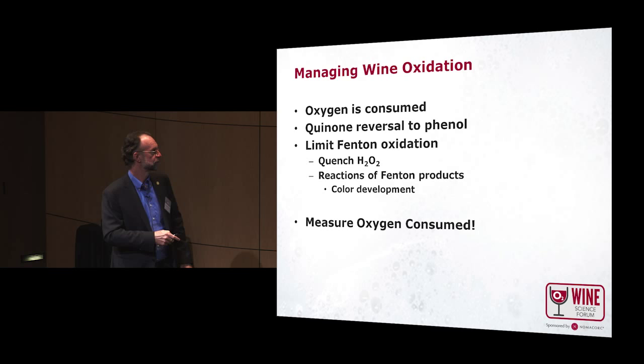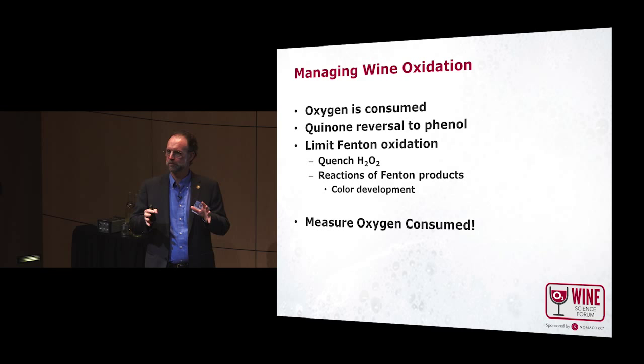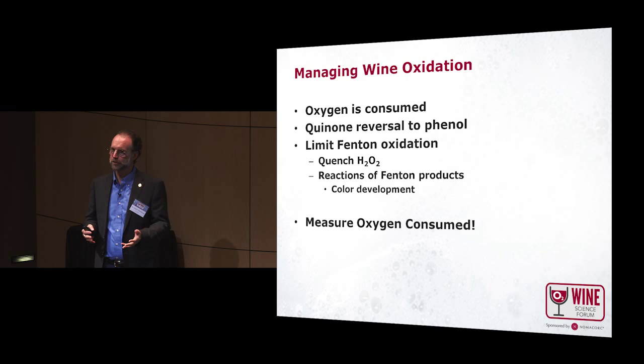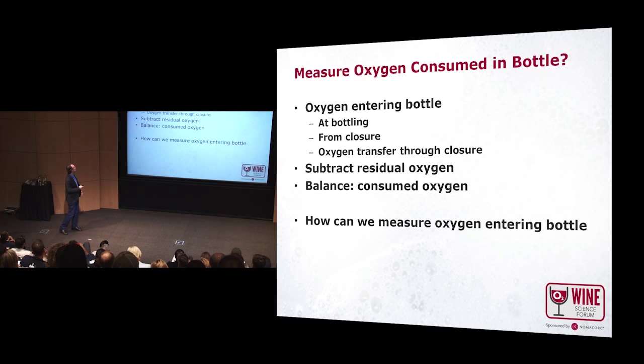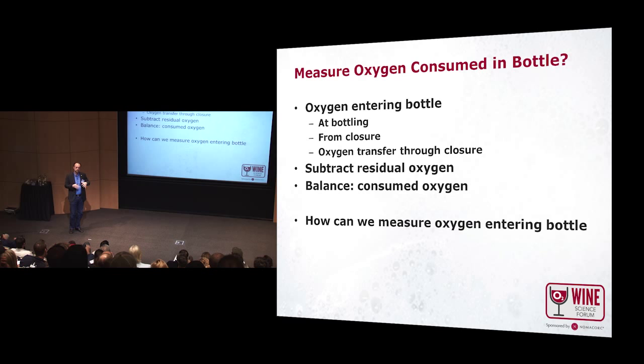To get started, if we're going to do an experiment in a bottle, we need to know how much oxygen is consumed — and it turns out that's very difficult to do. We need to know how much oxygen is coming in, how much got in there at bottling, how much is coming from the closure, and how much is transferring through the closure. Then we can subtract the residual oxygen. In our lab, what we do is measure residual oxygen with that Nomosense gadget, and then that tells you how much oxygen is consumed.